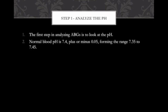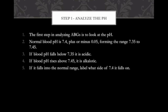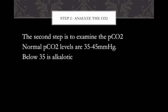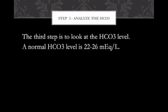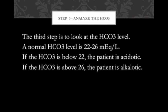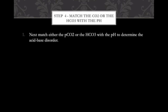Step one — analyze the pH. Normal blood pH is 7.4 plus or minus 0.05. Below 7.35 is acidic; above 7.45 is alkalotic. If it falls in the normal range 7.35 to 7.45, label which side of 7.4 it falls on — acidic side or alkalotic side. Step two — CO2: 35 to 45; below 35 is alkalotic, above 45 is acidic. Step three — bicarb: 22 to 26 mEq/L; below 22 is acidic, above 26 is alkalotic.